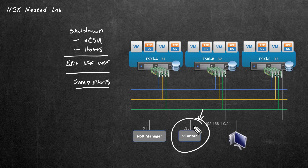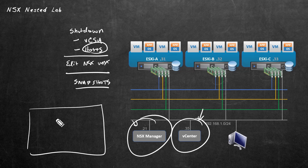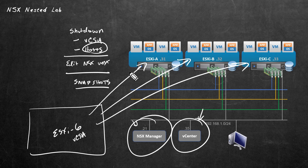Our vCenter is on the way down with a graceful shutdown. In our previous video, we migrated it from running on one of our nested ESXi hosts over to our physical host ESXi 6 for better performance. We also deployed the NSX manager to a physical host as well. Our next step is to do a graceful shutdown of the ESXi hosts. We've verified there are no VMs running on those hosts, so we can do a graceful shutdown of the guest OS from the parent vSphere environment. The fastest way to shut down these three VMs is from our parent vCenter.